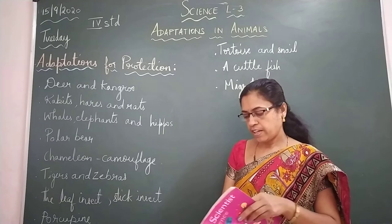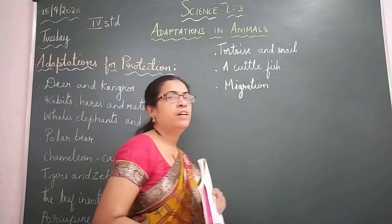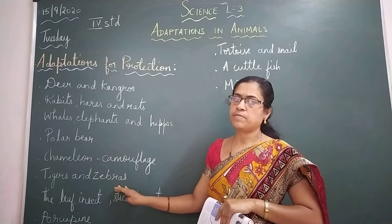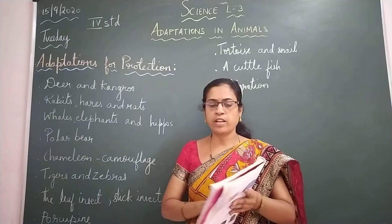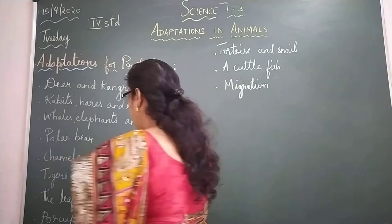Next are tigers and zebras. You can see the stripes on their bodies. These stripes help them escape from their enemies by helping them merge with their surroundings — hiding in long grass and plants in the forest. These animals can also easily hunt other animals because the stripes help them blend into long grass and plants of the forest.